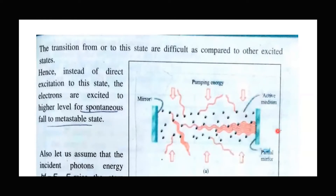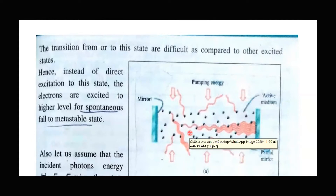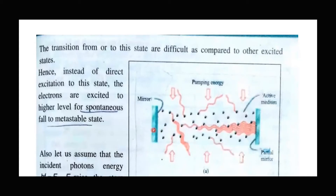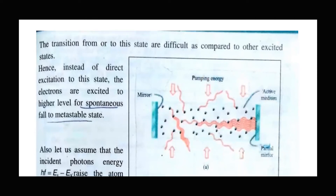The photons reflect back and forth within the assembly through the reflective mirrors, interacting with the active material and causing continuous emissions. The beam stays confined without spreading, moving straight. The partial reflecting mirror has a small opening through which some photons escape as the laser beam. If electric energy is used for pumping, it is called electrical pumping. If light or optical material is used, it is called optical pumping.